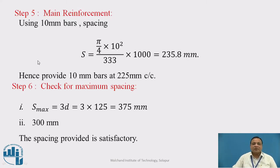Step 5: Main reinforcement. The spacing of main reinforcement I will find out using 10 mm bars. The spacing S equals π/4 times D squared upon A_ST. That was found to be 235.8 mm. Hence, provide 10 mm diameter HYSD bars at 225 mm center to center. This should be less than spacing calculated.